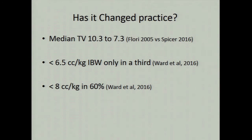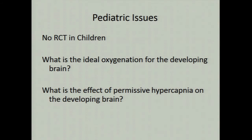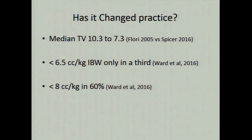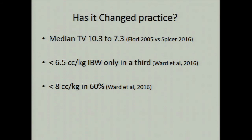Has this changed practice? Yes. Looking at our own published data from comparable centers between 2005 and 2016, tidal volumes have gone from 10.3 to 7.3 cc/kg. However, we are not there yet — less than a third of patients receive the ideal body weight tidal volume, and even today about 40% of patients receive more than 8 cc/kg. There is room for improvement, though we have come a long way. None of these RCTs has been done in children, and the ideal oxygenation target for the developing brain is not known.